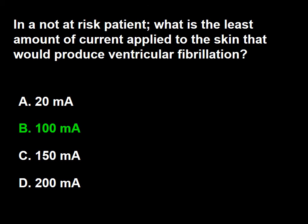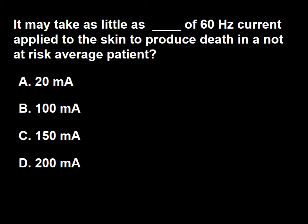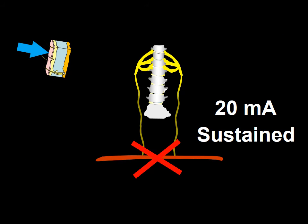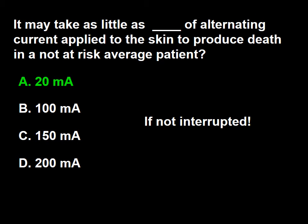Next question: it takes as little as how much 60 Hz current applied to the skin to produce death in a not-at-risk average patient? A: 20 milliamps, B: 100 milliamps, C: 150 milliamps, D: 200 milliamps. Current as small as 20 milliamps externally applied, if sustained, may produce diaphragmatic contraction and asphyxia. So the answer to this question is A.